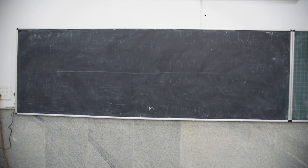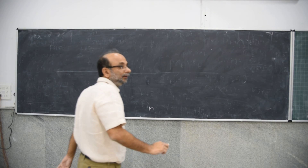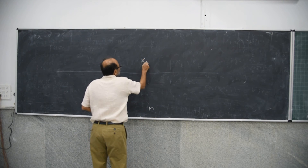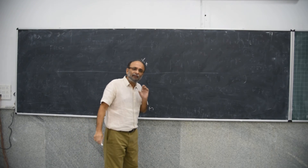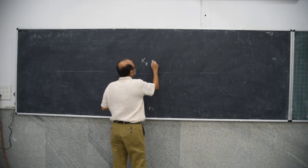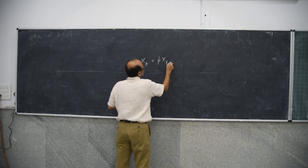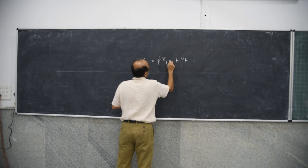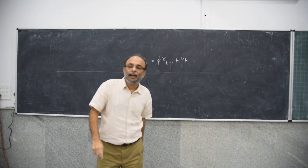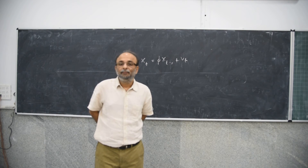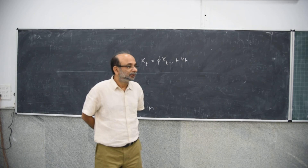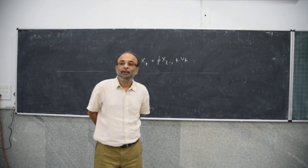Why the absolute value of phi should be less than 1. In general, think of an AR(1) process of the kind that we are concerned with: Xt is equal to phi times Xt minus 1 plus Vt.